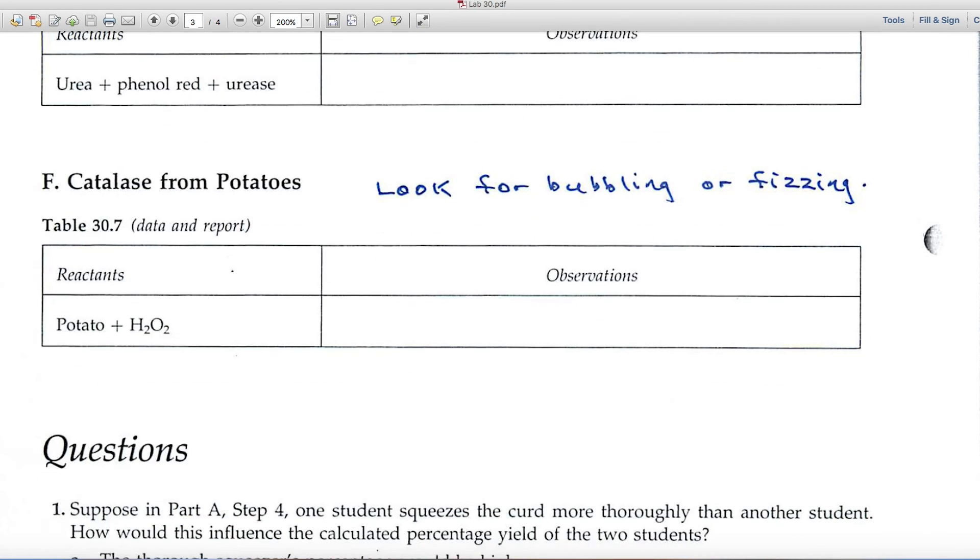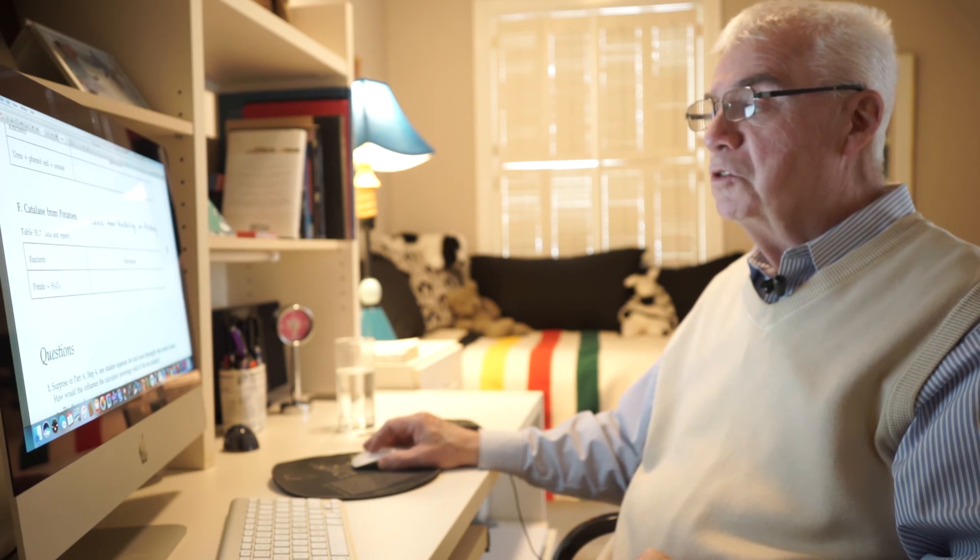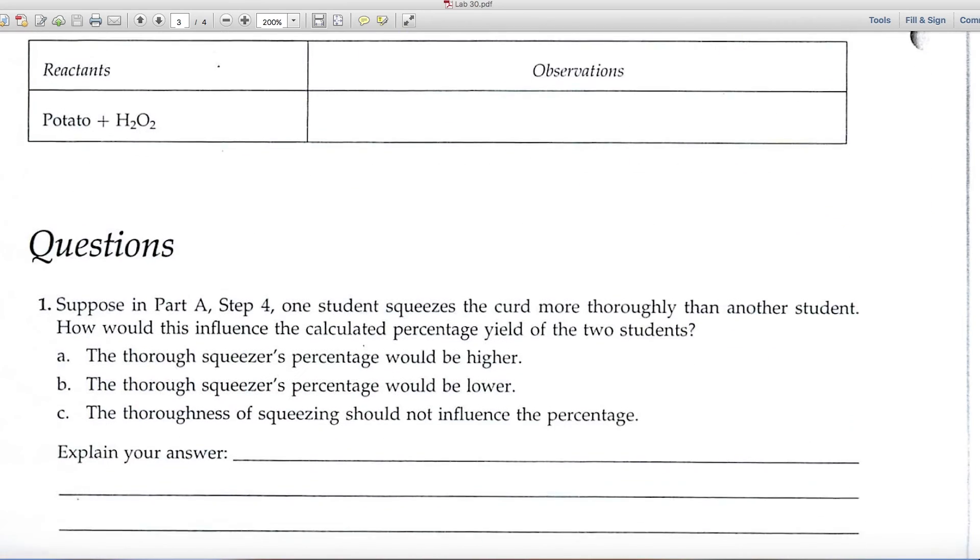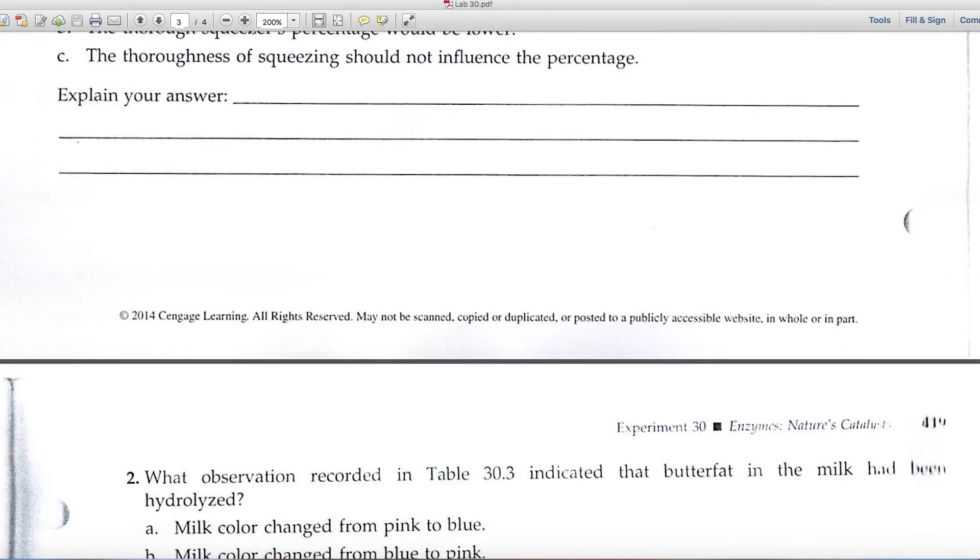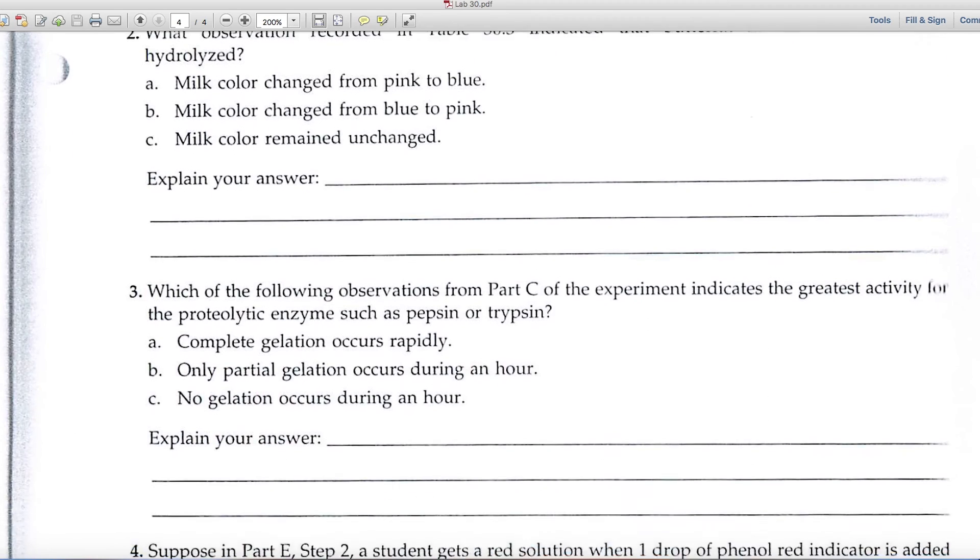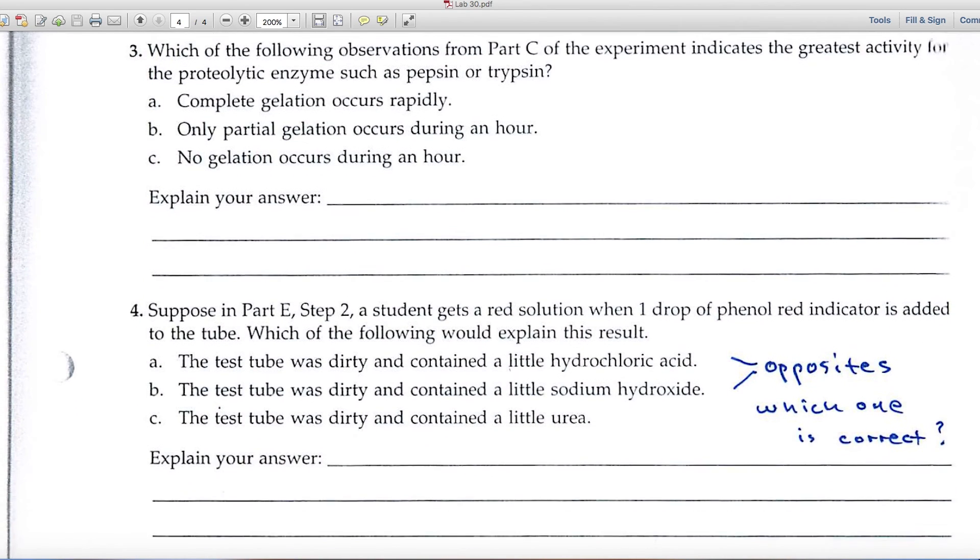Part F: catalase from potatoes. Potato that has catalase in it can break apart H2O2; the products are water and oxygen gas. As that gas is released, you'll see a bubbling or fizzing, so that's what you'd look for there. Questions – they're pretty straightforward; I don't think you'll have any difficulty with these.